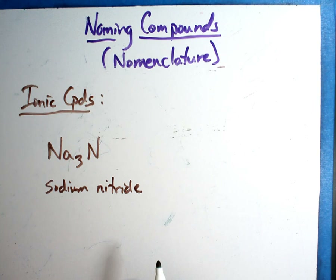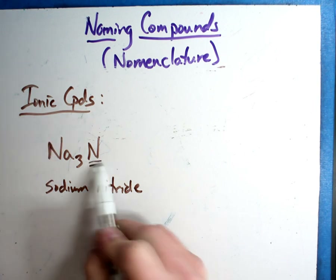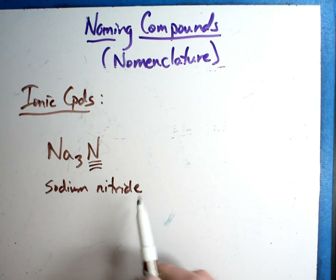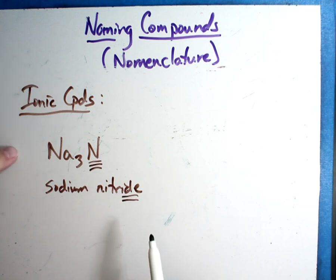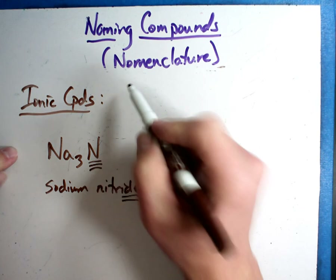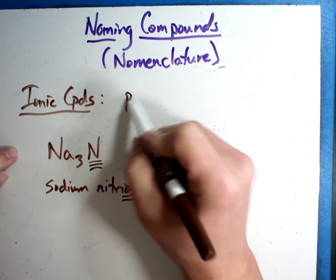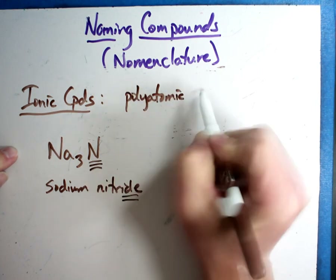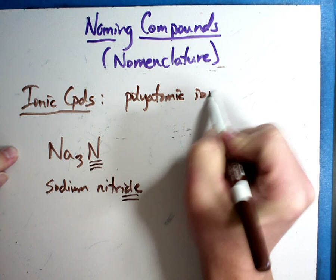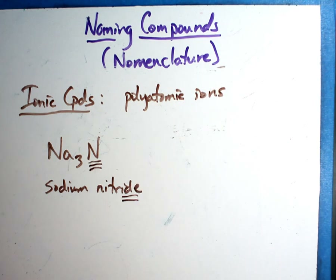We've heard those and we try to throw those at it. Here's the deal: if it is a single element, it's just that. But I want to talk about those things — nitrate, sulfate, those kinds of things. Those are what are called polyatomic ions.